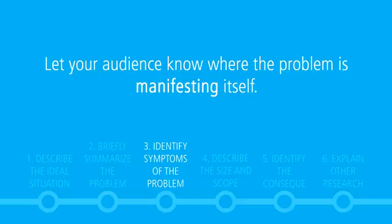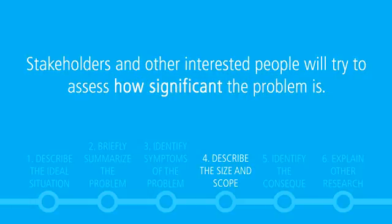Number three, let your audience know where the problem is manifesting itself. Describe the symptoms of the problem that others can see or detect so that they understand the problem you're working on. Number four, stakeholders and other interested people will try to assess how significant the problem is. To help them understand this, provide information about the size and scope of the matter.